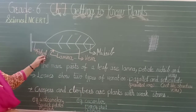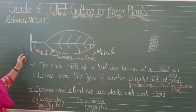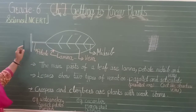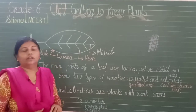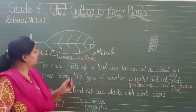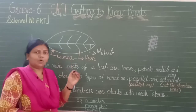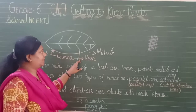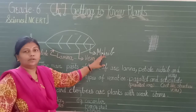Petiole is the part of a leaf which is connected to the stem of a plant. Lamina is the broad part of a leaf. The small lines you can see in the leaf are called veins, and the central line of a leaf is known as the midrib.